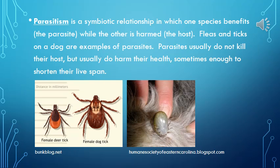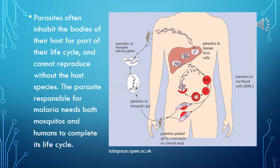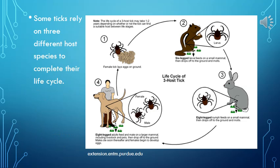Parasitism is a symbiotic relationship in which one species — the parasite — benefits, while the other — the host — is harmed. Fleas and ticks on a dog are examples of parasites. Parasites usually do not kill their host, but do harm their health, sometimes enough to shorten their lifespan. Parasites often inhabit the bodies of their host for part of their life cycle and cannot reproduce without the host species. The parasite responsible for malaria needs both mosquitoes and humans to complete its life cycle. Some ticks rely on three different host species to complete their life cycle.